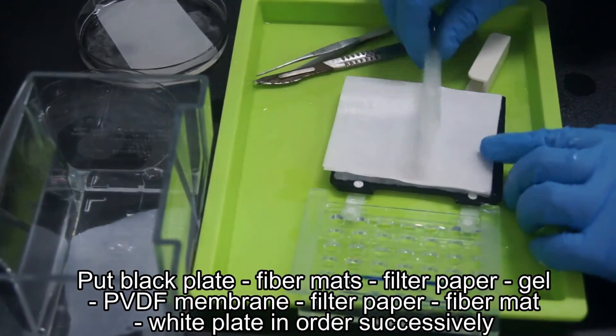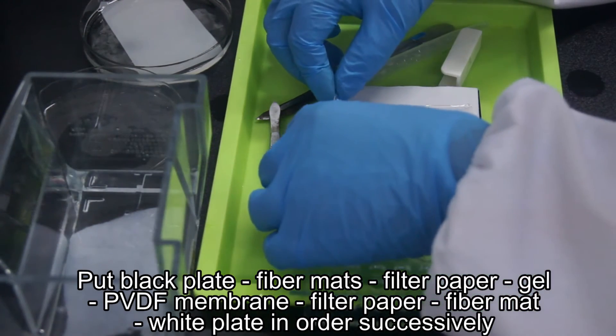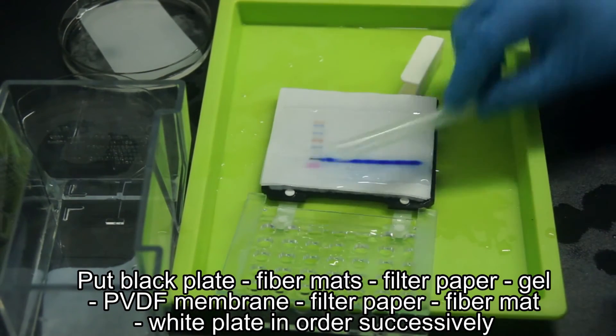After sandwiching the gel and membrane between filter papers, clean out the air bubbles between the gel and the membrane with a roller, pipette, or 15 milliliter EP tube.